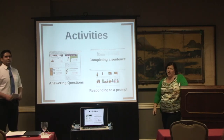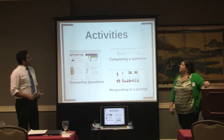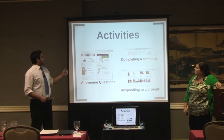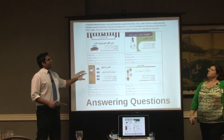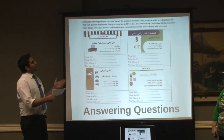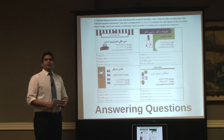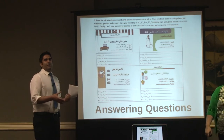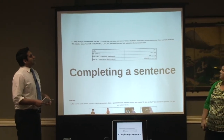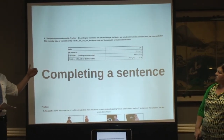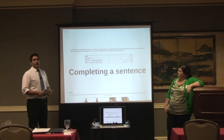For example, we have some activities in our modules that require more information. For answering questions, we provide authentic text for students such as business cards. They read the information and provide answers for each of the questions under each picture. Then they record themselves and post their recording to the discussion board, which will be assessed by one of the classmates or the instructor. We also have complete-the-sentence activities where we provide incomplete sentences for the students, they complete them, record themselves as a monologue, and post their work to the discussion board or assignment, where it will be checked by the instructor.